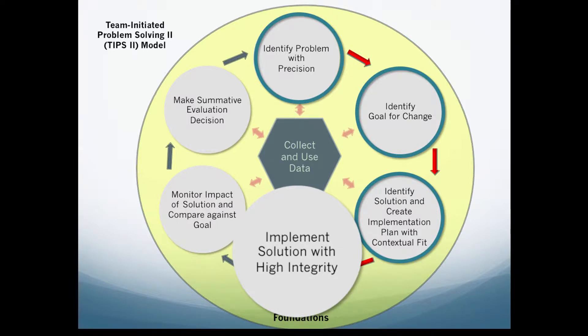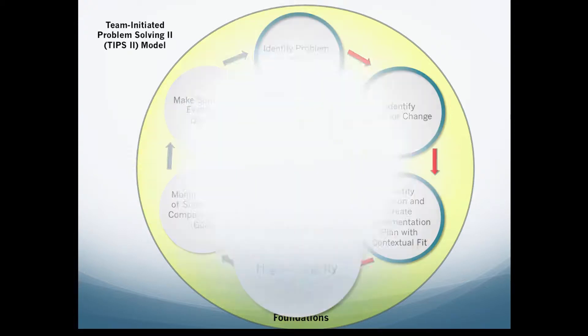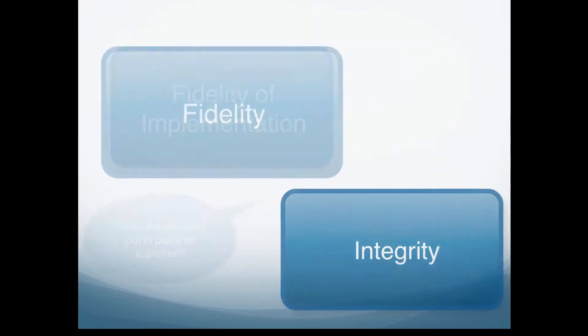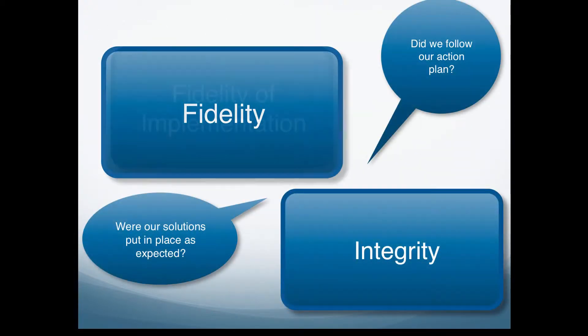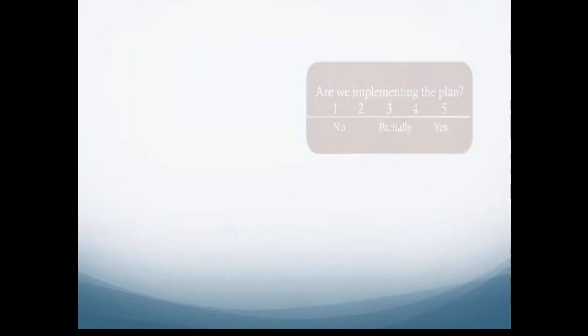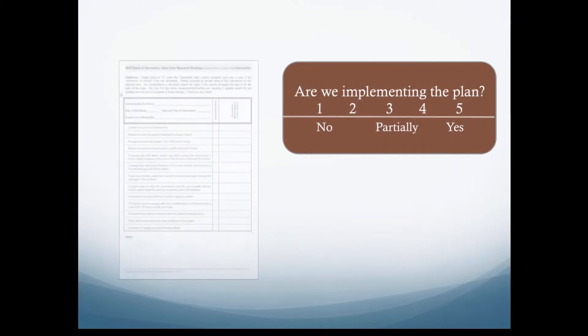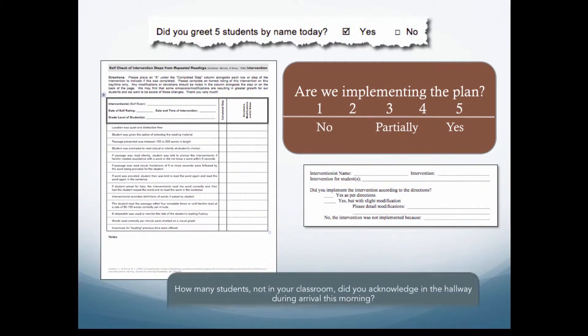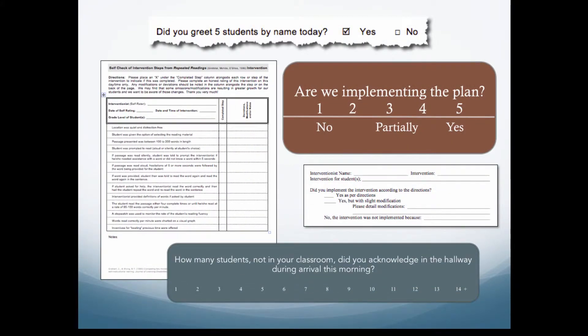In other words, can we be sure that our solutions are implemented with fidelity? To answer this question, teams must examine data gathered to monitor solution implementation by using data gleaned from previously defined sources such as fidelity boards, integrity check-in baskets, observations, or targeted checklists that are completed when steps are accomplished.